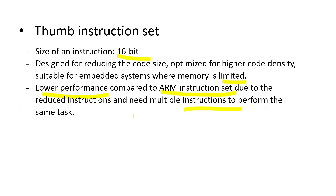With the Thumb instruction set, the size of each instruction is only 16-bit, so the code size is reduced. It has lower performance compared to the ARM instruction set and takes multiple instructions to perform the same task compared to ARM instructions.